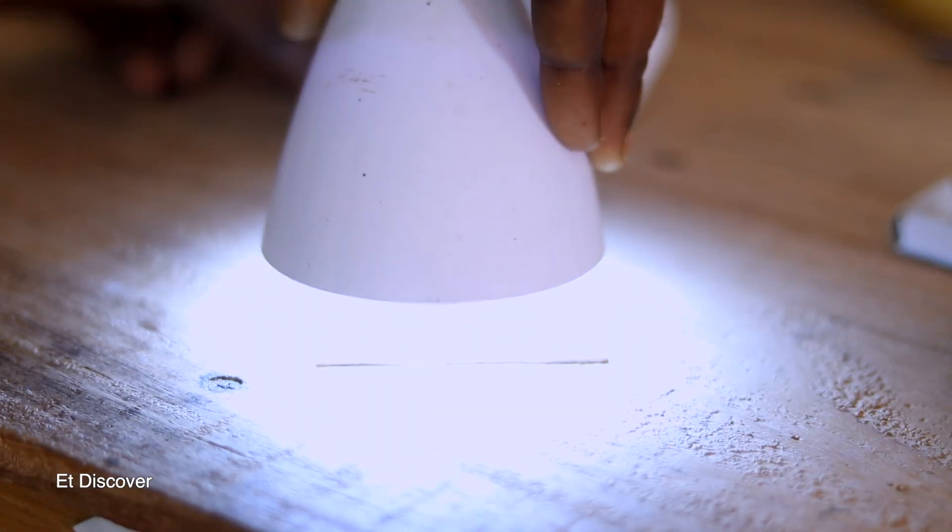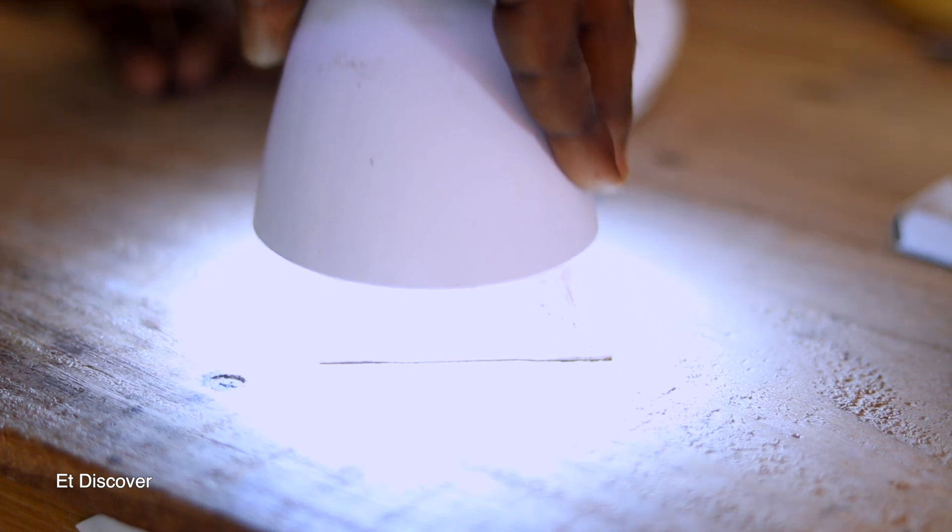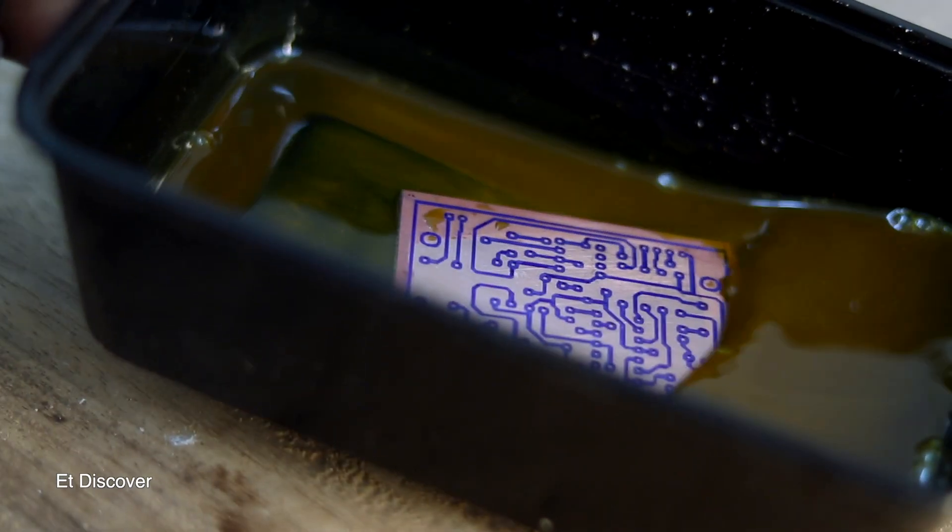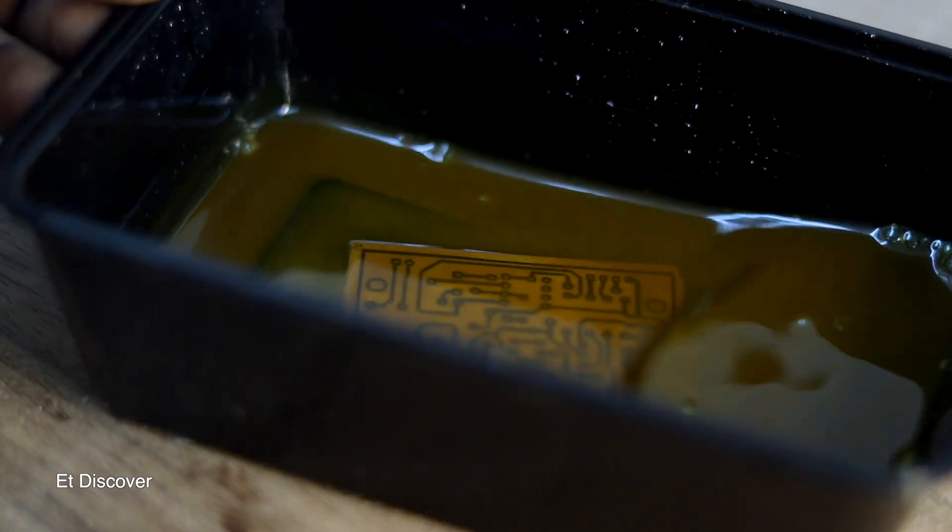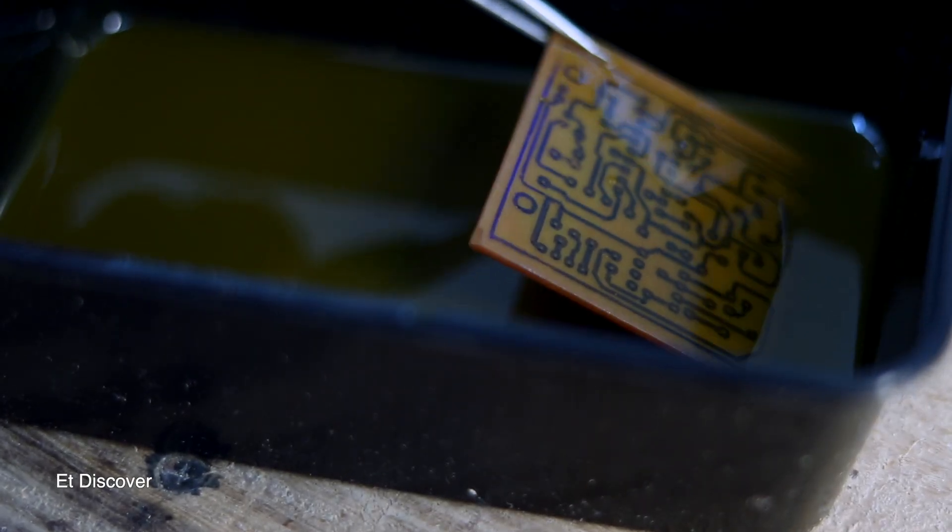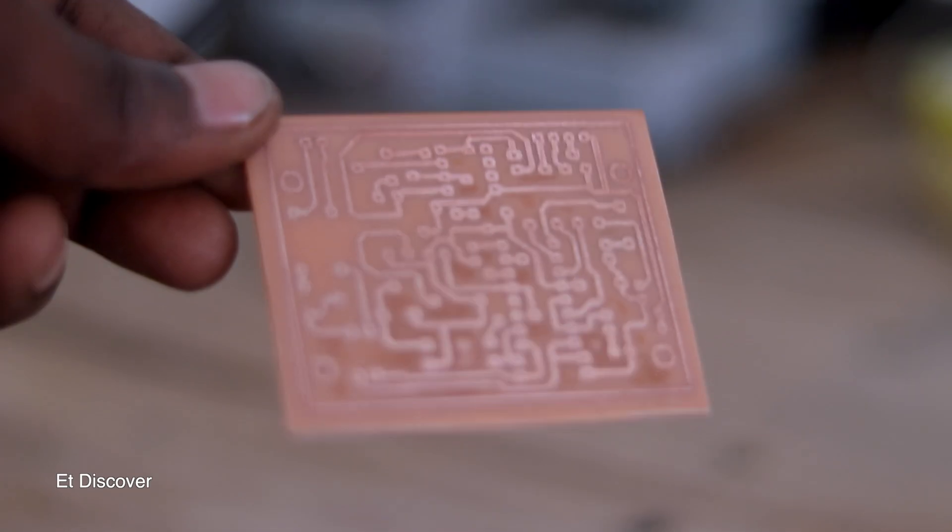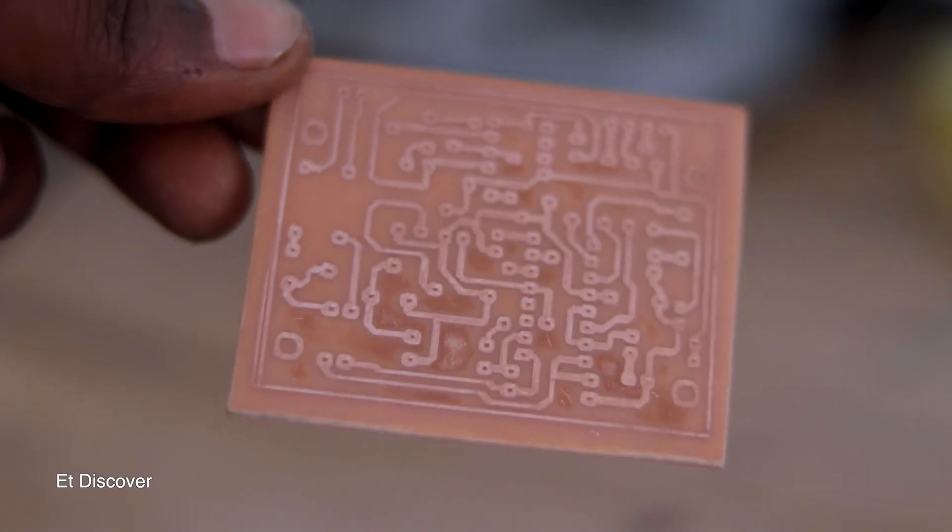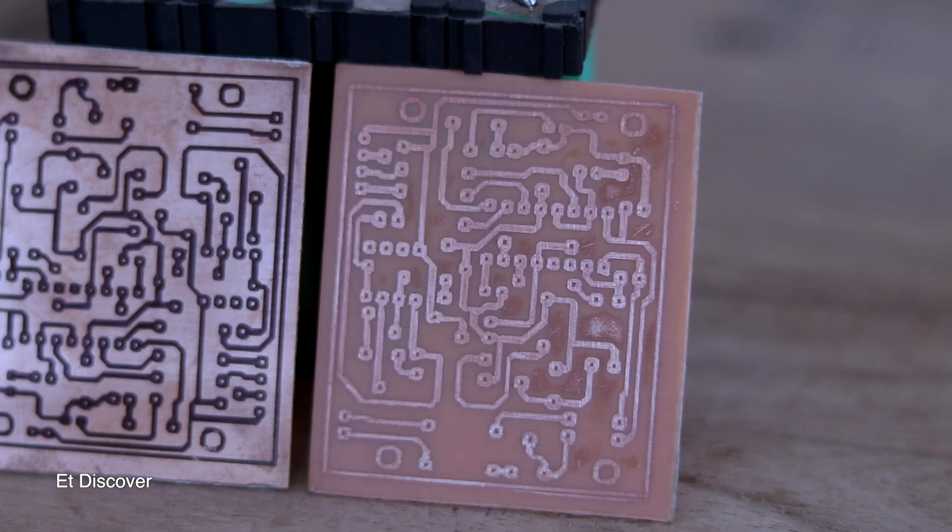For this, I apply my table lamp to dry it. After drying it, I put it in ferric chloride acid. This process will take 5 to 10 minutes. After completing this process, you can see this is usable and acceptable. So guys, with this process you can make your PCB very fast and more precisely.